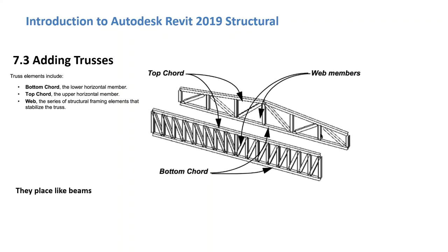As various forces act on these nodes, the triangular shape provides structural stability to prevent bending. You have the bottom cord, which is the lower horizontal member, and then the top cord, which is the upper horizontal member. The web is the series of structural framing elements that can stabilize the truss.